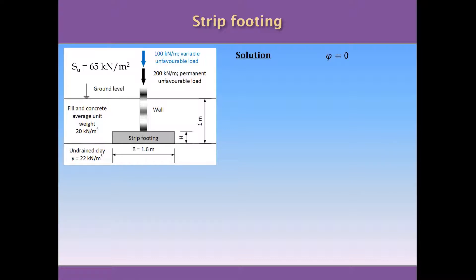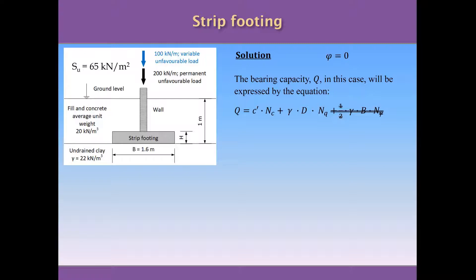Because the soil we are dealing with is a clay, the angle of internal friction is equal to zero because there is no sand present. The bearing capacity for shallow foundations has a general expression: the bearing capacity equals cohesion times coefficient Nc, plus gamma times depth d times coefficient Nq, plus half of gamma times width B times coefficient N-gamma. The last term is related with sand, so we eliminate it because the angle of internal friction is zero, making N-gamma equal to zero as well. The formula we are going to use has two terms involving cohesion and the depth of the strip footing.